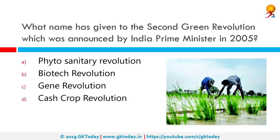What name has been given to the second green revolution announced by the Indian Prime Minister in 2005? It was known as the gene revolution. The green revolution promised much, but today it is caught up in environmental controversies with fertile land turning barren due to chemical overuse, drying aquifers, and vanishing biodiversity. The keyword today is the gene revolution, but even here poor farmers tend to suffer.